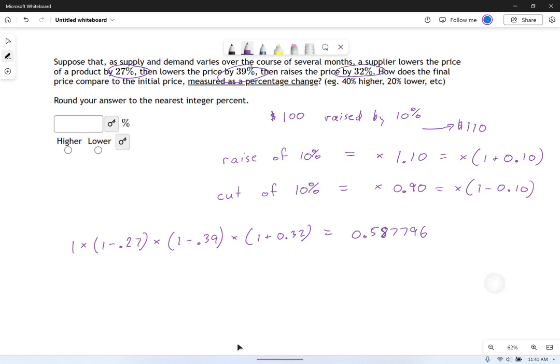So what is this as a percentage? This is like 58.7796%. Which if I'm rounding, is really 59%. So the price is 59% of the original.